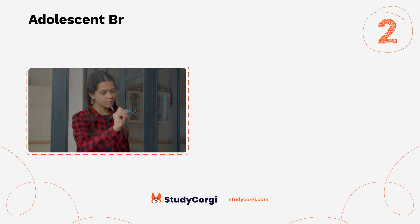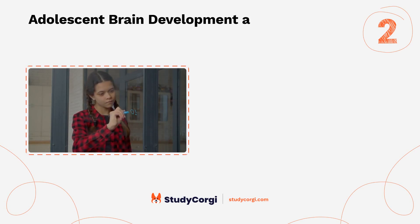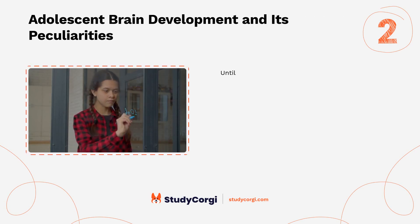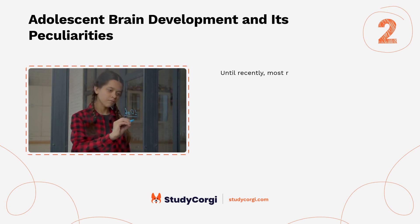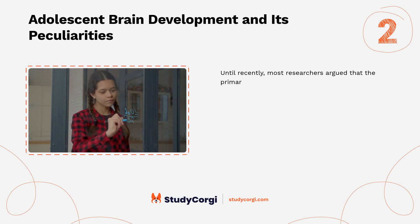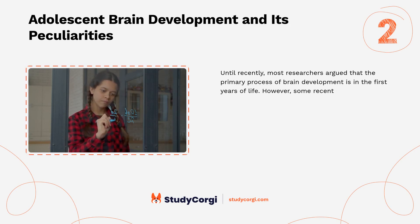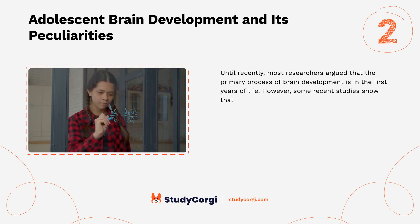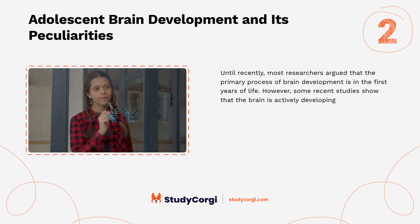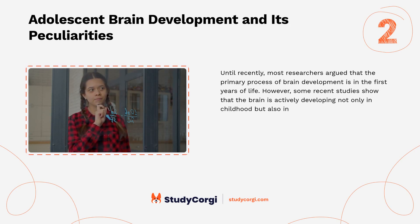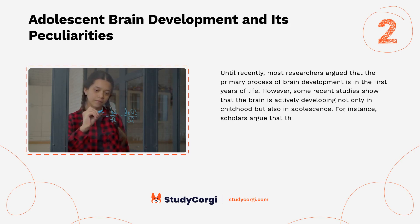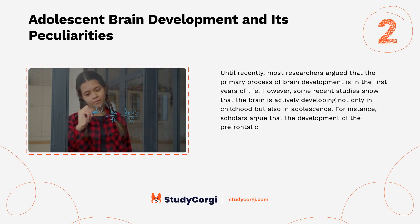Adolescent brain development and its peculiarities. Until recently, most researchers argued that the primary process of brain development is in the first years of life. However, some recent studies show that the brain is actively developing not only in childhood but also in adolescence. For instance, scholars argue that the development of the prefrontal cortex undergoes significant changes precisely in adolescence.